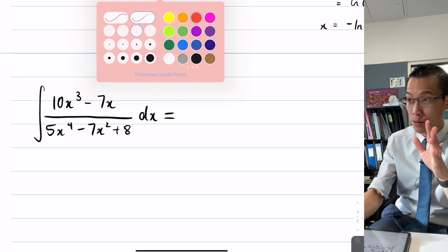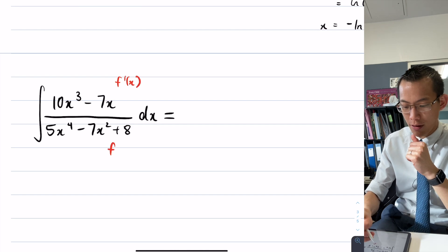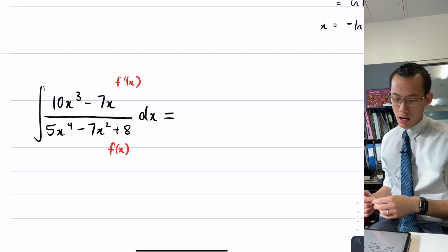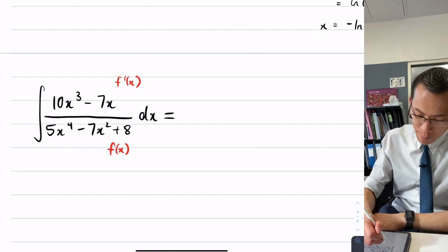The key pattern you've already sort of cottoned on to is f dash on f, right? That's what I'm searching for. Now you've already identified, you're like, oh, I don't want 10x cubed, I want 20x cubed.